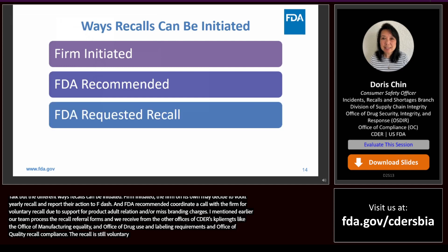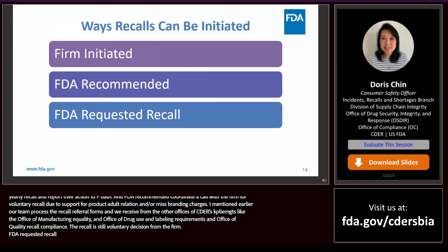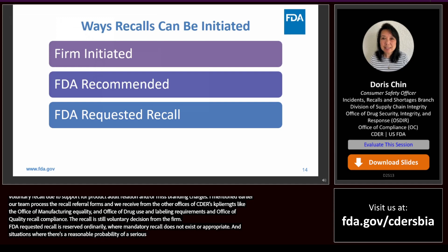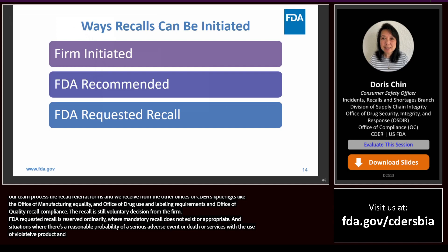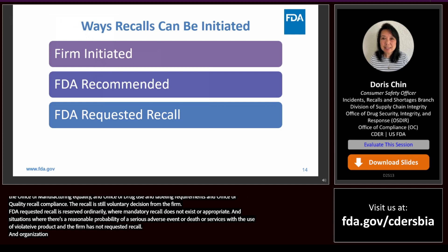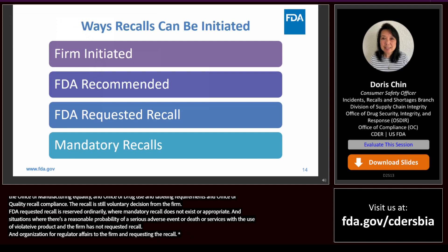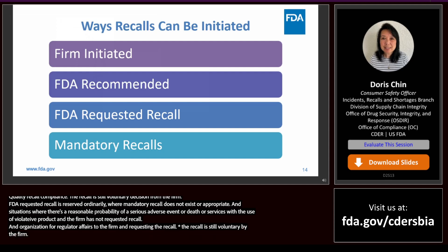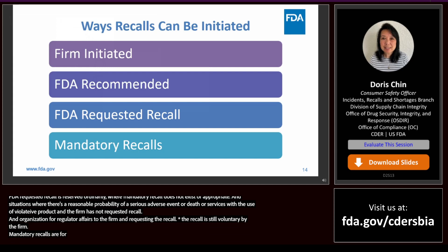An FDA-requested recall is ordinarily reserved for urgent situations where mandatory recall authority does not exist or is not appropriate — most often Class 1 situations where there's a reasonable probability of a serious adverse event or death associated with the violative product, and the firm has not yet recalled on its own. This is a letter from the Associate Commissioner for Regulatory Affairs requesting the firm initiate a recall; the recall remains a voluntary decision by the firm. Mandatory recalls are for controlled drug substances only, where there is a reasonable probability of serious adverse health consequences.